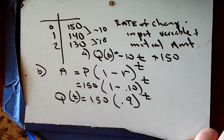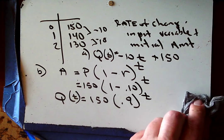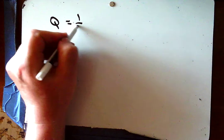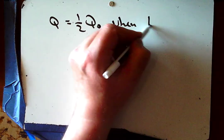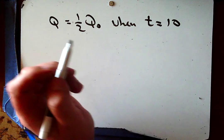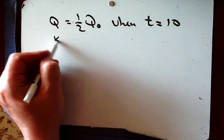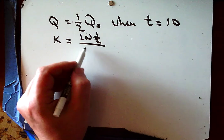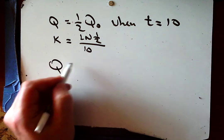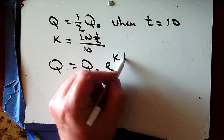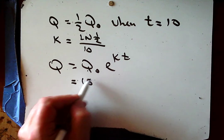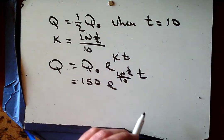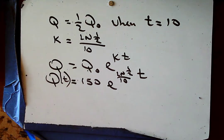Part C: half as much remains after 10 days. That's a half-life problem. Q = (1/2)Q₀ when t = 10. The shortcut for k in half-life problems is k = ln(1/2)/10. So the model is Q(t) = 150 · e^(ln(1/2)/10 · t).